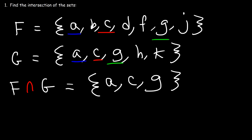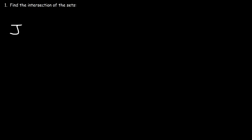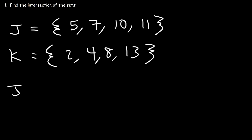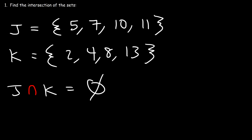Finding the intersection is pretty straightforward. But now, what about this particular example? Let's say set J contains the elements 5, 7, 10, and 11. And set K has the elements 2, 4, 8, and 13. So, what is the intersection of J and K? Notice that there is no common element shared between the two sets. The elements in J are completely different from the elements in K. So in that case, the intersection of J and K is going to be empty — a null set.